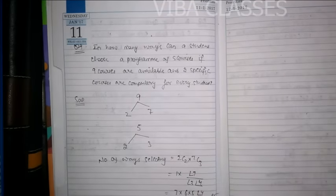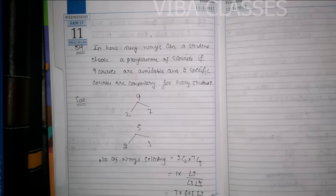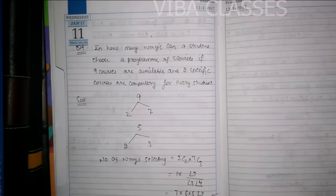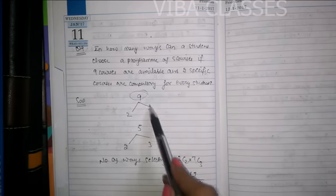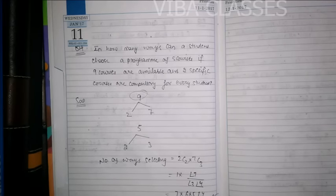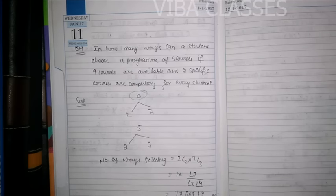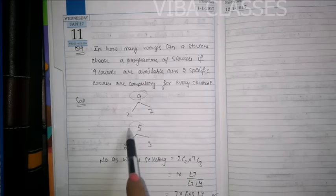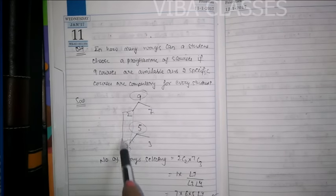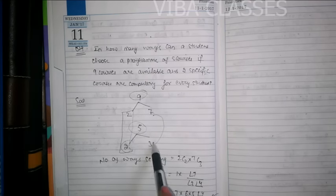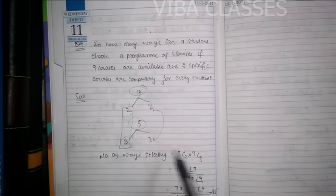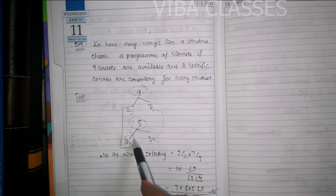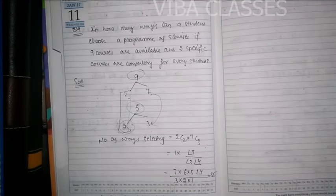Question number 9 — the last question: In how many ways can a student choose a program of 5 courses if 9 courses are available and 2 specific courses are compulsory for every student? 9 courses hain lekin 2 compulsory hain — unka selection ka sawaal nahi uthta. Total 5 courses mein se 2 toh fixed hain, toh baaki 7 mein se sirf 3 select karne hain. Isliye 7C3 likhte hain, aur answer aata hai 35 ways.